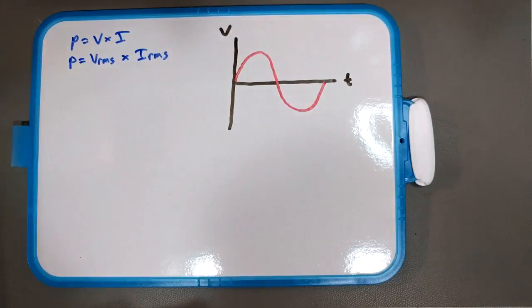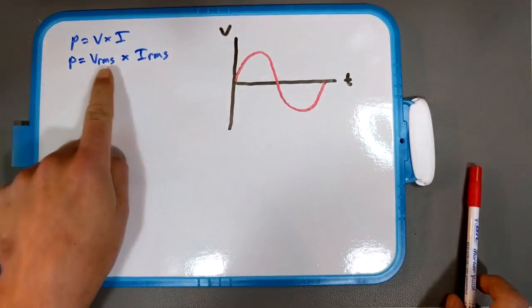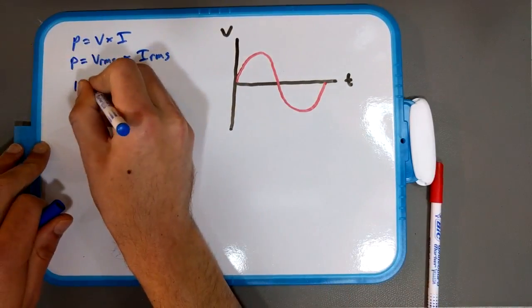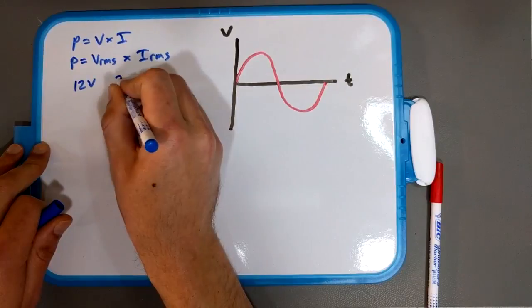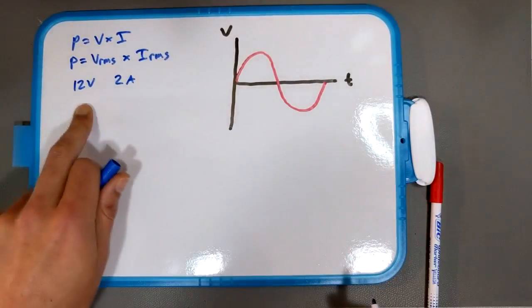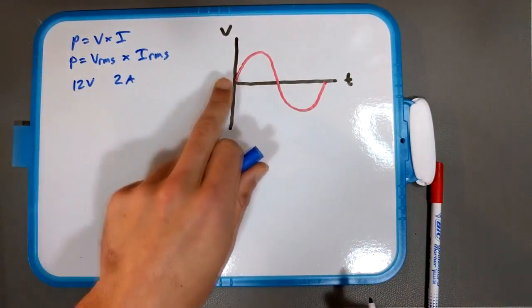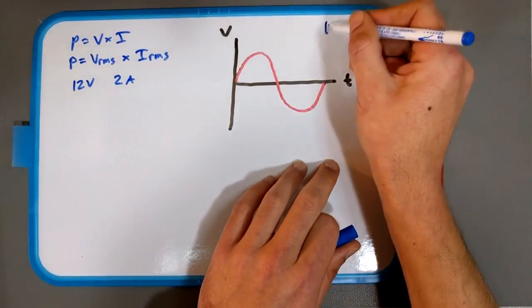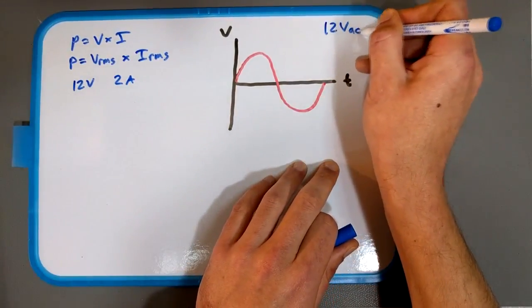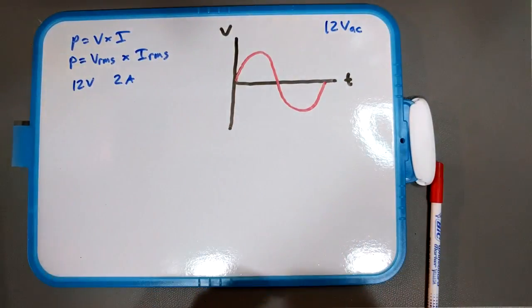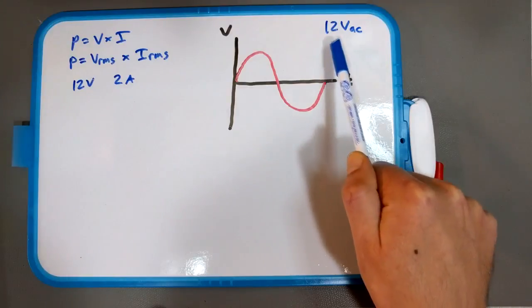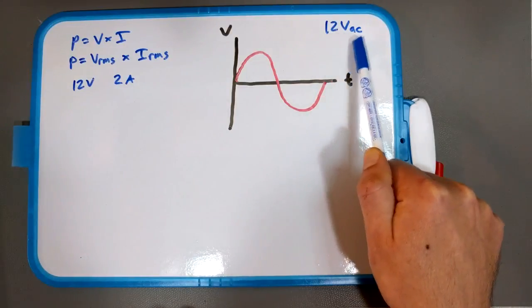So, right, if in our DC example we had 12 volts and 2 amps, right? But that's DC. So what if we have 12 volts AC? How does that actually work? Well, what you need to do, the trick here,